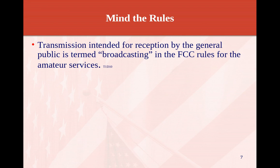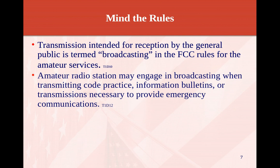Transmissions intended for reception by the general public is defined as broadcasting in the FCC rules for amateur services. This is generally one-way transmission, and that's not allowed. Amateur radio service is two-way communication — we're not broadcasters. However, amateur stations may engage in broadcasting when transmitting code practice, information bulletins, or transmissions necessary to provide emergency communications. For example, W1AW down in Connecticut transmits practice code, and amateur radio news line provides information bulletins — those are okay.